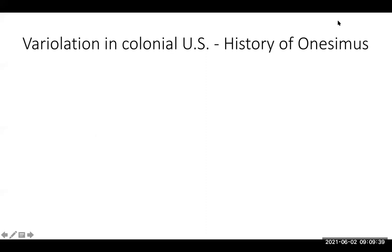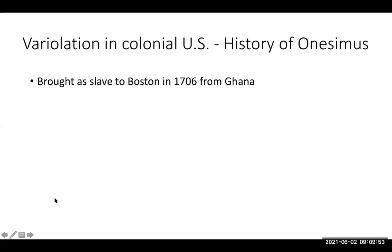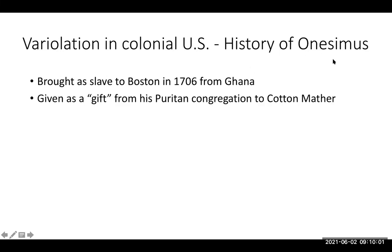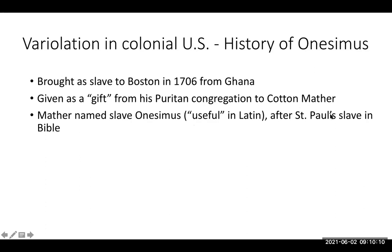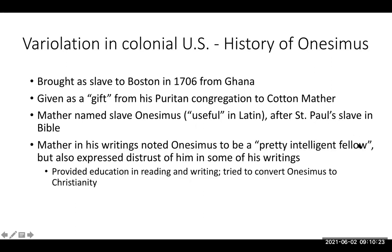I'm going to look at the history of variolation in colonial America based on the story of Onesimus, which is always interesting when you read about stories that aren't widely told. Onesimus was brought to Boston as a slave in the 1700s from Ghana. He was given to Cotton Mather as a gift from his Puritan congregation. Mather named him Onesimus — a biblical name for St. Paul's slave. Mather wrote a lot and described Onesimus as an intelligent fellow, though he wasn't fully trusting of him. He provided Onesimus with education and multiple times tried to convert him to Christianity.